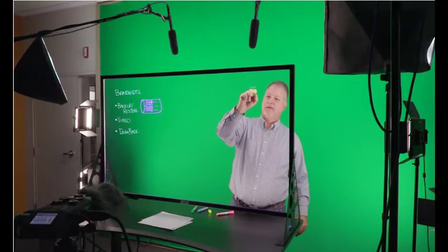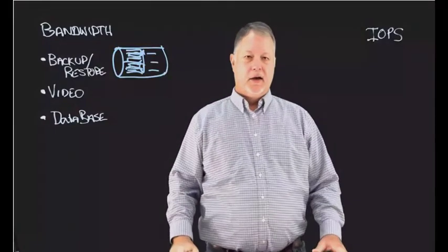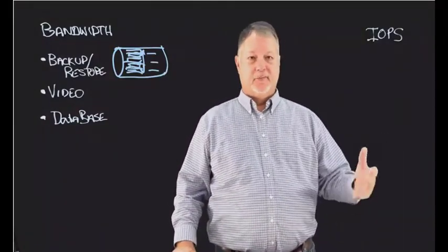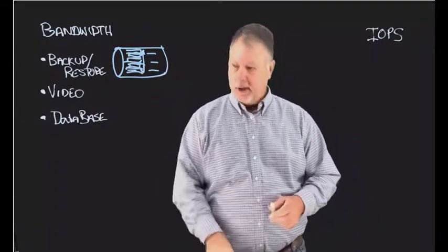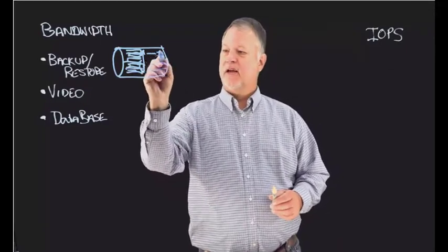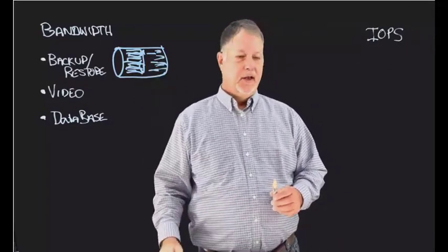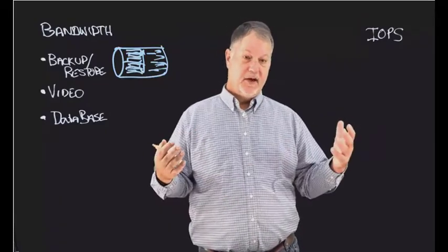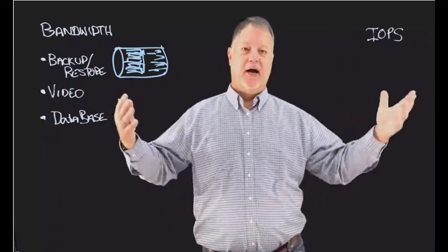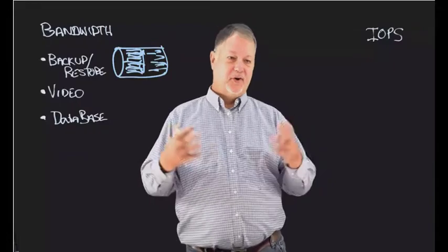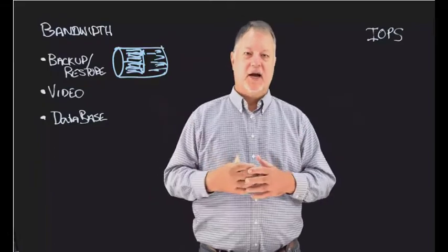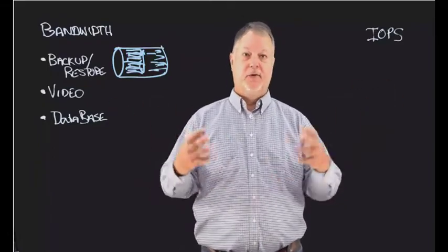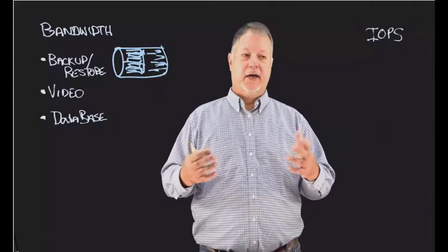The other primary parameter we want to talk about is IOPS. IOPS is Input/Output Operations Per Second, and this has to do with how many of these transactions I can actually fill in the pipe. Now the thing about IOPS is all of us manufacturers like to tout how many IOPS we can push. For example, in our 25 gig Ethernet adapters, I can do two-point-something million IOPS, and my 32 gig Fibre Channel adapters can do two million IOPS. That's great, but let's do the math.